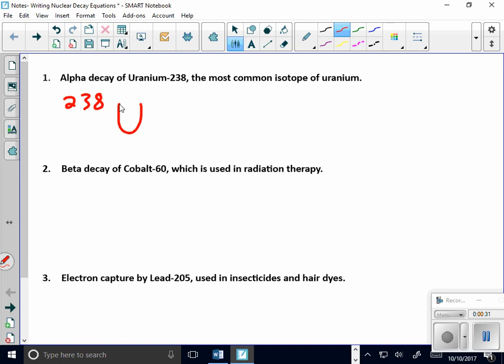92 is the atomic number of uranium, straight off the periodic table. I know that if I'm having alpha decay, it's one of the easier ones because I told you, the 4 over 2 helium, that's the alpha particle right there.